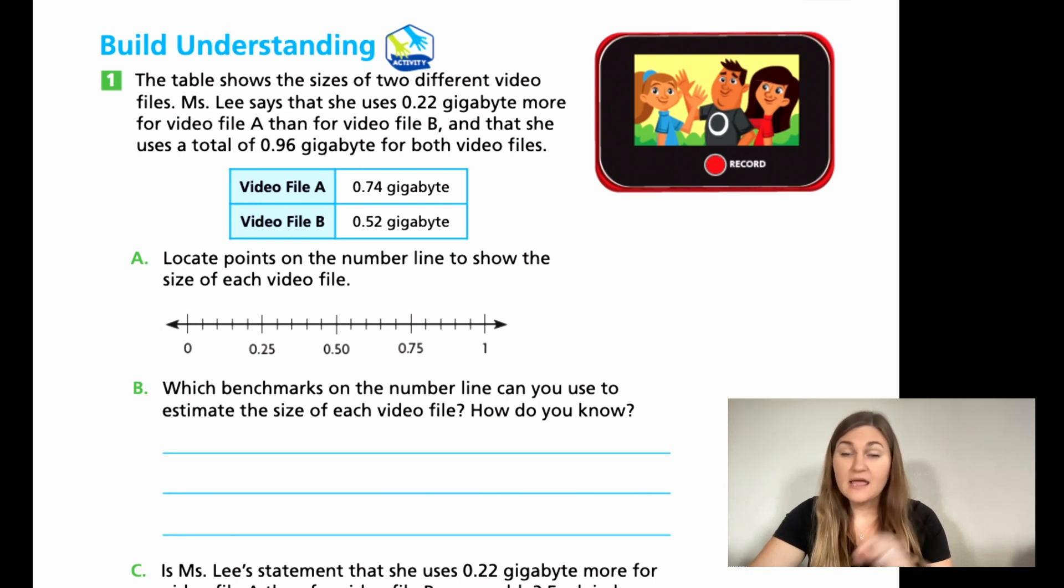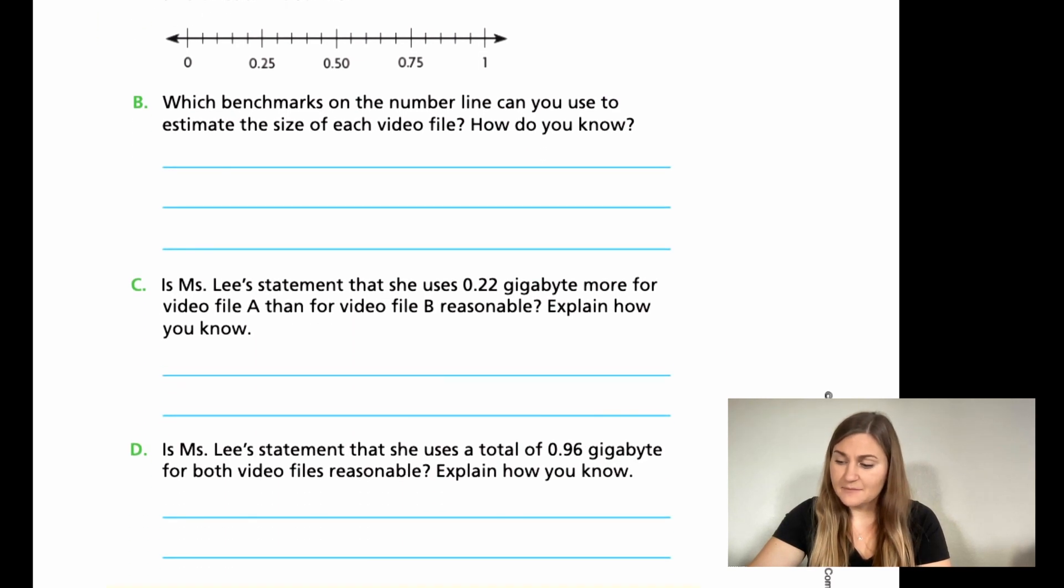For B, which benchmarks on the number line? That means the numbers that are already there. That 0.25, the 0.50, the 0.75, and the 1. So which of those benchmarks estimate to be the size of each video file? And then how do you know? C, is Ms. Lee's statement that she uses 0.22 gigabytes more for video file A than for video file B? Is that reasonable? And then explain. And D, is Ms. Lee's statement that she uses a total of 0.96 gigabytes for both video files reasonable? Explain. All right, go ahead and try these four problems on your own and then come back so we can solve them together. Go ahead and hit pause here.